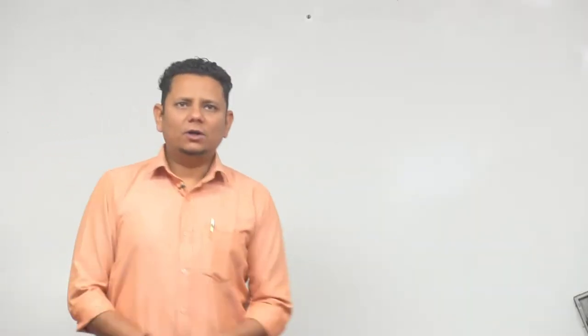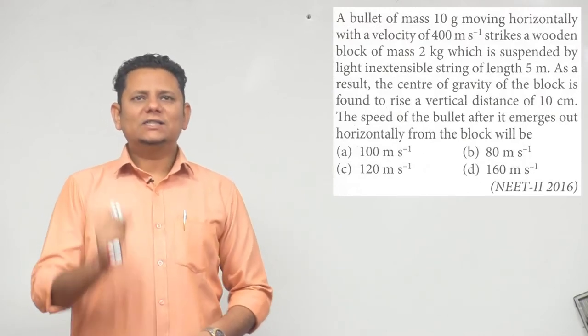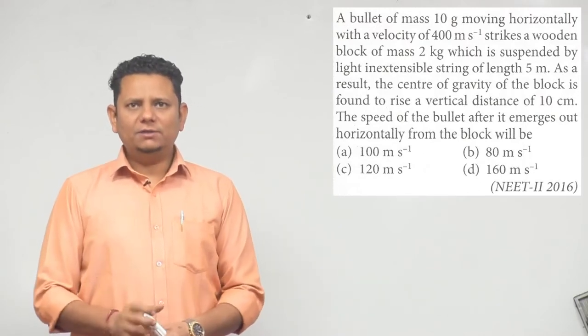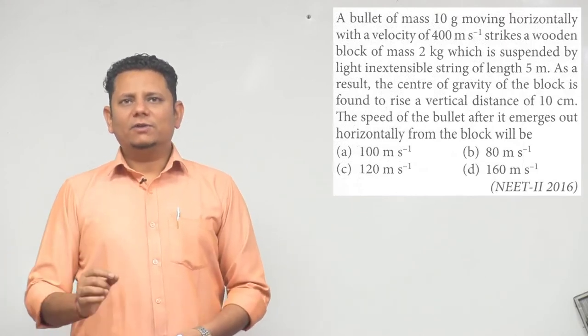Next question: A bullet of mass 10 grams moving horizontally with a velocity of 400 meters per second strikes a wooden block of mass 2 kg which is suspended by a light inextensible string of length